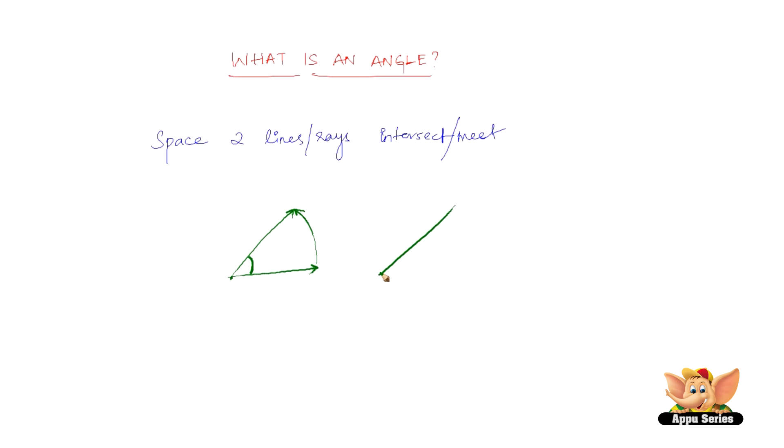Usually, an angle is named like this. This point where the two rays meet is called a vertex, or it can be named as O, and this angle can be called AOB. So it is named angle AOB.